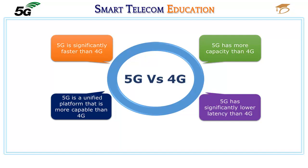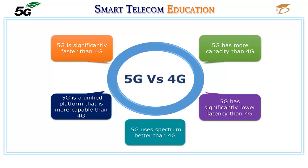5G can also natively support all spectrum types — licensed, shared, and unlicensed — and bands — low, mid, and high — as well as a wide range of deployment models, from traditional macro cells to hotspots, and new ways to interconnect such as device-to-device and multi-hop mesh. 5G is designed to get the most out of every bit of spectrum across available bands, from low bands below 1 GHz, to mid bands from 1 GHz to 6 GHz, to high bands known as millimeter wave.